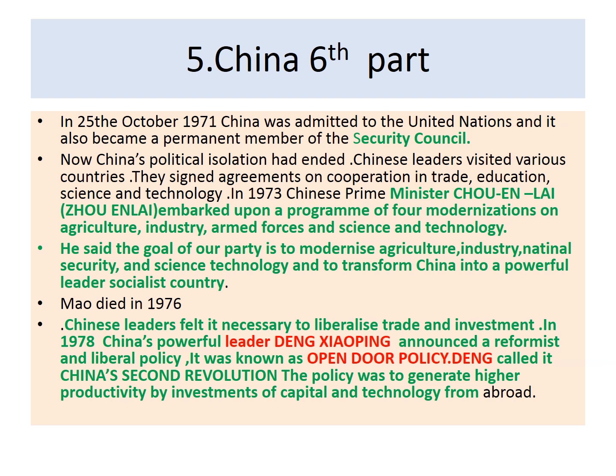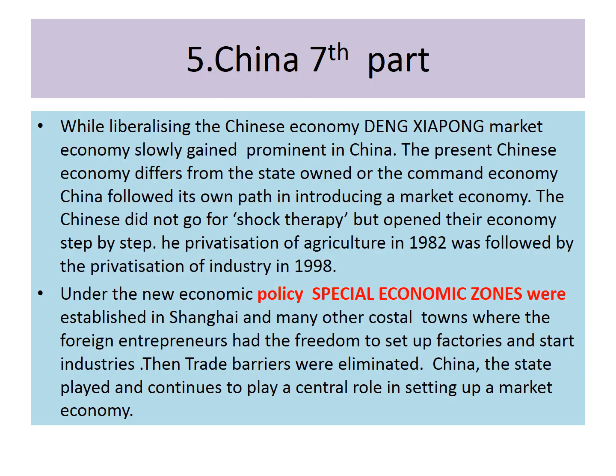Mao died in 1976. China's leaders felt it necessary to liberalize trade and investment. In 1978, China's powerful leader Deng Xiaoping announced a reformist and liberal policy known as the Open Door Policy, which Deng called 'China's second revolution.' The policy was to generate high productivity by investments of capital and technology from abroad. Trade barriers were eliminated, and the state played and continues to play a central role in setting up a market economy.